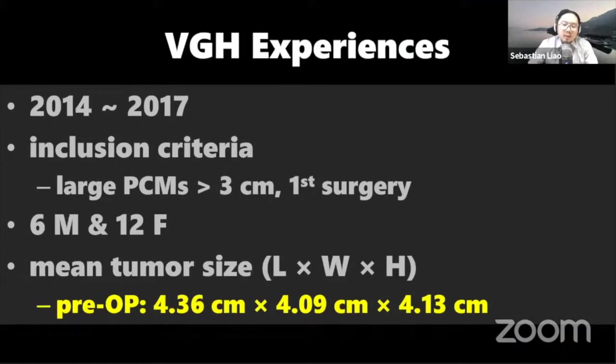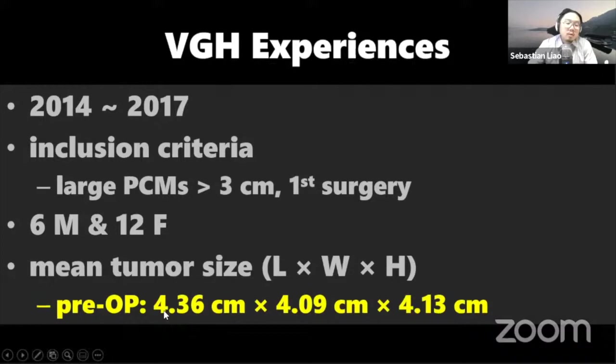It is not necessary to use retraction with this approach. From this paper, we conclude using VGH experience from 2014 to 2017: there are 18 patients. We only include large petroclival meningiomas — tumors where every dimension, whether width, length, or height, is above three centimeters — and the mean tumor size preoperatively was all over four centimeters.